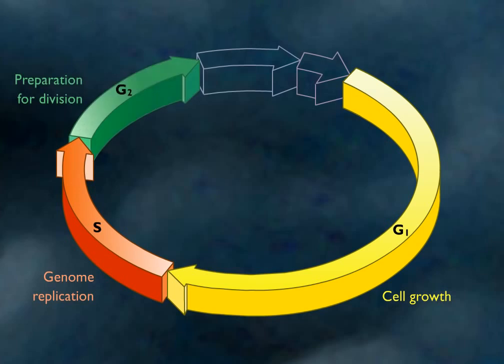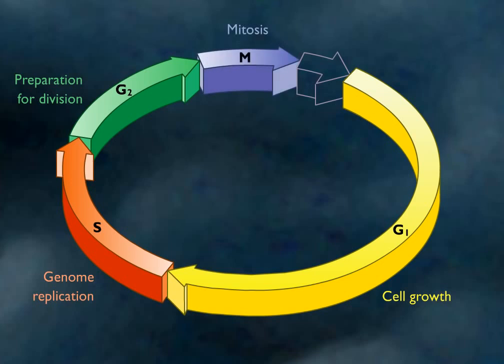During the G2 phase, cells continue to grow and prepare for cell division. During the M phase, mitosis occurs. Cytokinesis, C, is the phase when the cytoplasm divides,